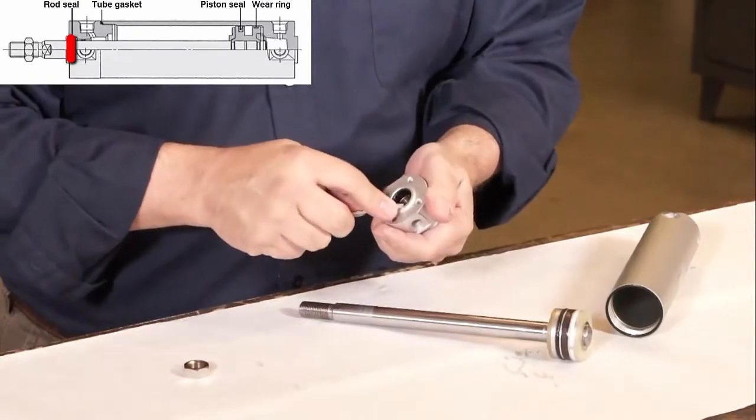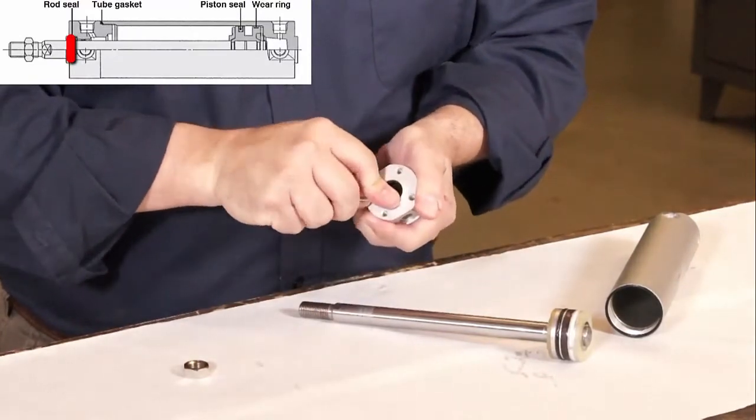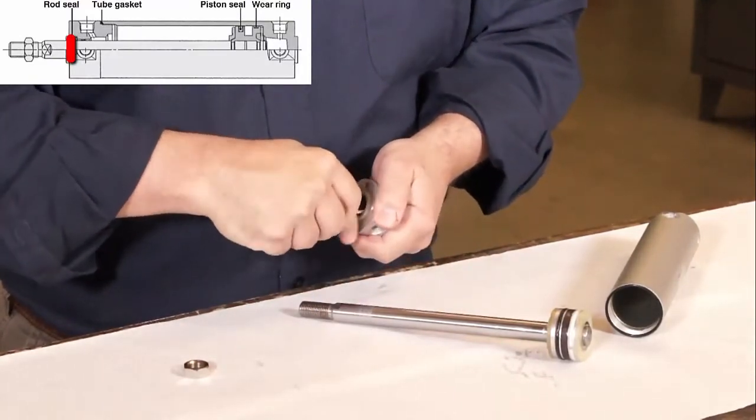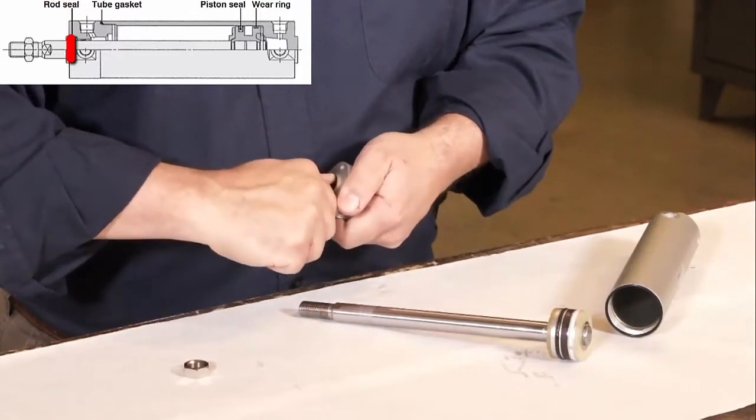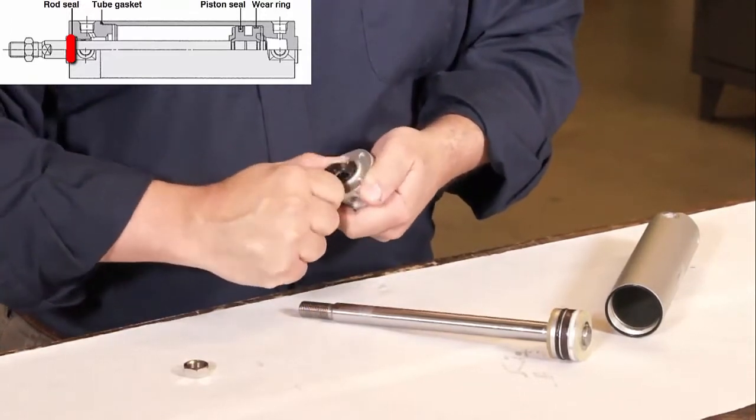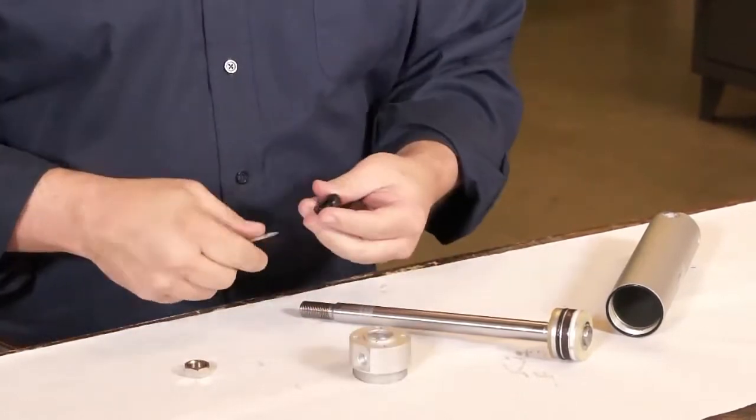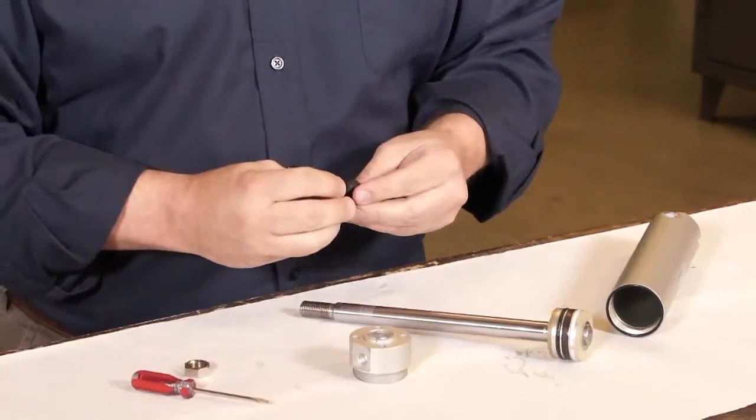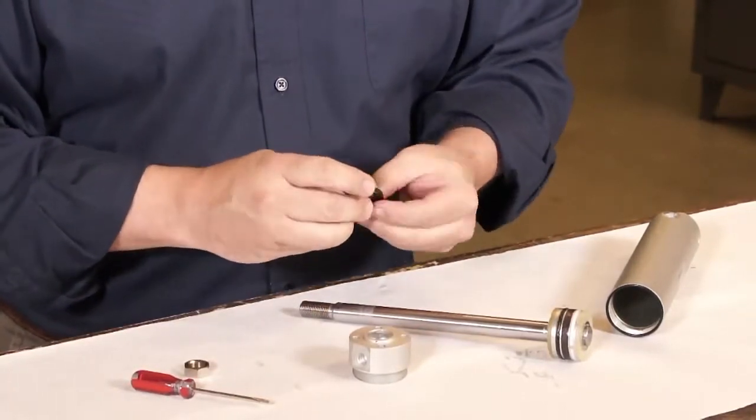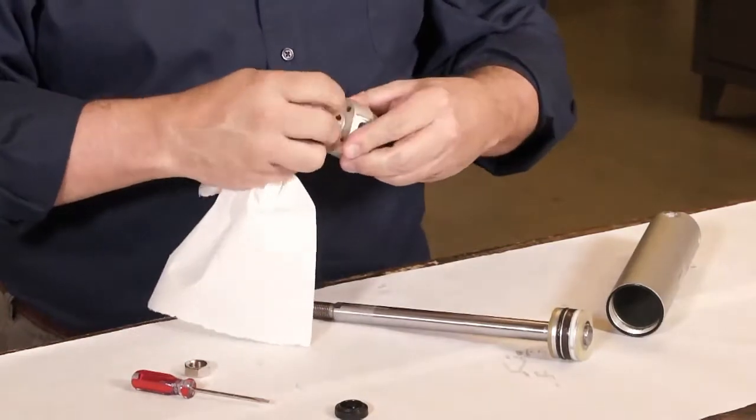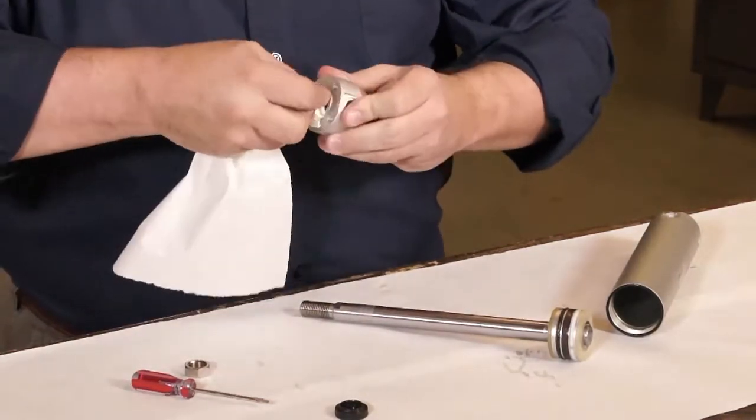First, remove the rod seal. The CG1 rod seal also acts as a wiper to remove light debris from the rod as the rod retracts. Don't scratch the cylinder. Inspect the seal for damage, hardness, or swelling. If none, make sure that the old grease has been cleaned from the bushing and the seat for the seal.